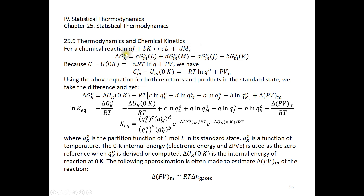The standard Gibbs energy of reaction is C times the standard molar Gibbs energy of L, plus D times the standard molar Gibbs energy of M, minus the molar Gibbs energy of J and K with their coefficients. Because G minus the 0K internal energy equals negative nRT ln(Q) plus PV, the standard molar Gibbs energy minus the 0K molar internal energy equals negative nRT times the natural logarithm of the standard partition function plus PV sub M, where this is the molar volume.